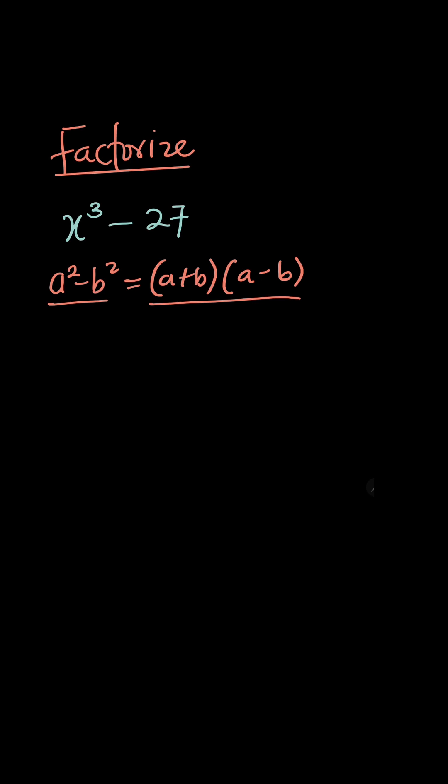So then what is the formula we can use? The formula is, anytime you have a cubed minus b cubed, it equals a minus b times a squared plus ab plus b squared.